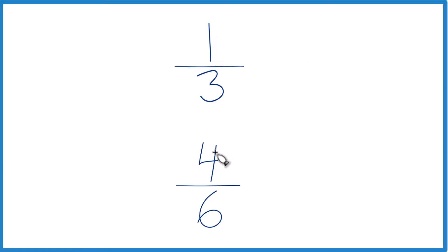The other way to do it, I can see that 4 and 6, I could divide both of these numbers by 2 and simplify this a little bit further. 4 divided by 2 is 2, 6 divided by 2 is 3. So I can simplify 4 6ths down to 2 3rds.